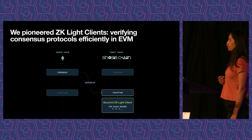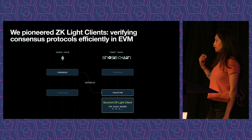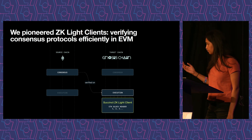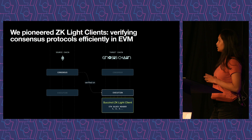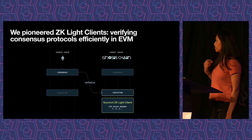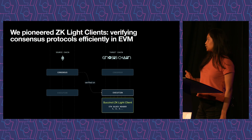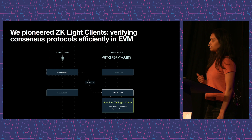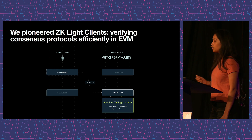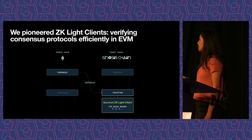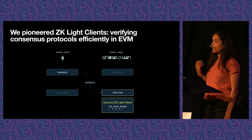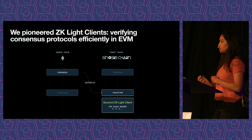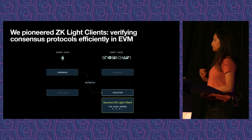This is useful because, say, you have a source chain like Ethereum that has consensus. You can verify the consensus of Ethereum in a ZK-SNARK circuit, and then verify it in the execution layer of another target chain, such as Gnosis Chain or really any other Alt-L1. Then that target chain can have access to Ethereum's state natively without the need for any multisigs or trusted operators in the middle.